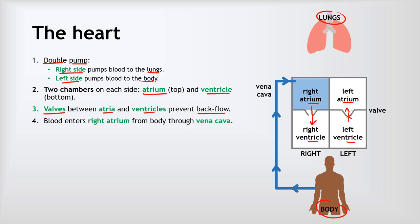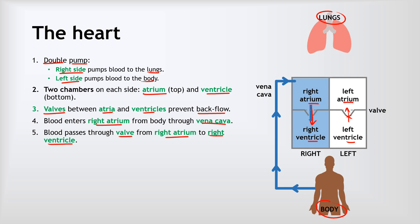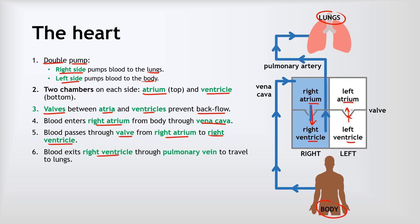Blood enters the right atrium from the body through the vena cava. At this point the blood is low in oxygen because it has given oxygen to all the cells, and high in carbon dioxide because it has taken waste away from cells. The right atrium contracts and blood passes through the valves into the right ventricle. The right ventricle then contracts and forces blood out through the pulmonary artery towards the lungs — pulmonary meaning to do with the lungs.